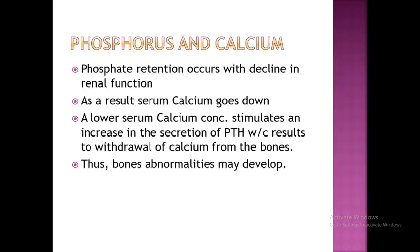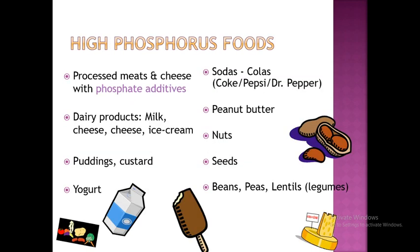Regarding phosphorus and calcium: phosphate retention occurs with decline in renal function. As a result, serum calcium goes down. A lower serum calcium concentration stimulates an increase in secretion of parathormone, which results in withdrawal of calcium from the bones, and bone abnormalities may develop. High phosphorus foods include processed meats with phosphate additives, dairy products like milk, cheese, ice cream, puddings, custards, yogurt, soda, cola, peanut butter, nuts, seeds, and beans.